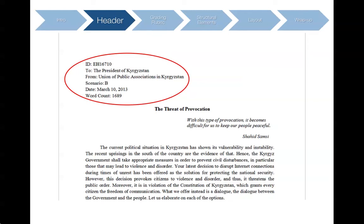Second, tell us who your paper is addressing — this usually refers to the government of the country that you choose. Third, tell us who your paper is being issued by. Depending on the task, this is the perspective you are asked to represent. Fourth, tell us which scenario you're responding to — remember, you can only choose one scenario. Also put a date on your paper, and finally, include your word count, which excludes the bibliography.